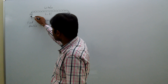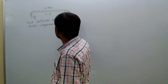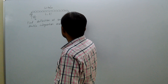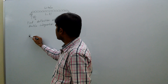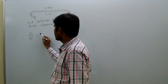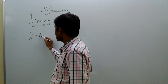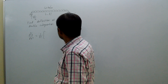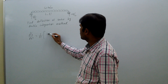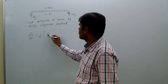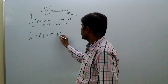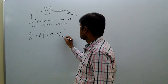So, the reactions are WL by 2 and WL by 2. The bending moment equation is: d²y/dx² equal to 1 by EI into M(x) equal to WL by 2 into x minus Wx squared by 2.